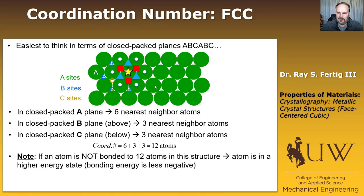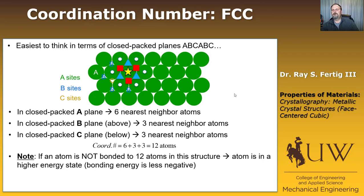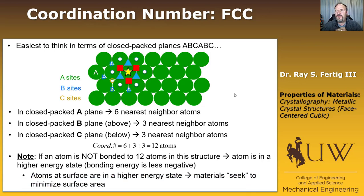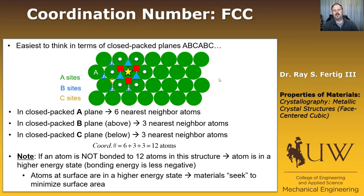If an atom is not bonded to 12 atoms in this structure, it's in a higher energy state. If I pluck out a neighboring atom, the bond energy between them — which was negative — no longer contributes, so we lose that decrease in bond energy, and lower energy equals more stable. Think about what a surface is: at a surface you're removing neighbors, so atoms at the surface are actually in a higher energy state. Materials therefore seek to minimize their surface area because those are high energy regions — that's basic thermodynamics.